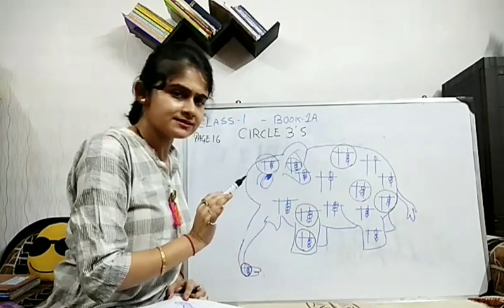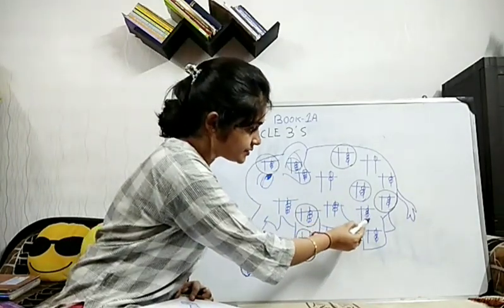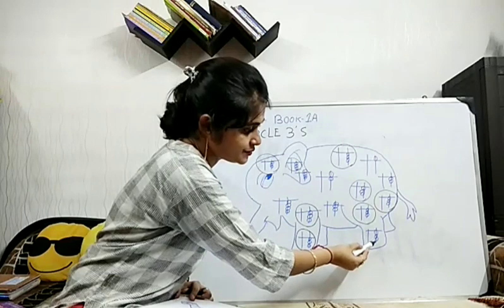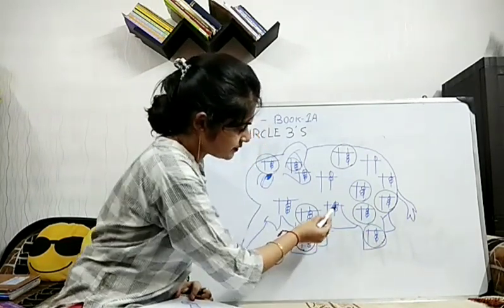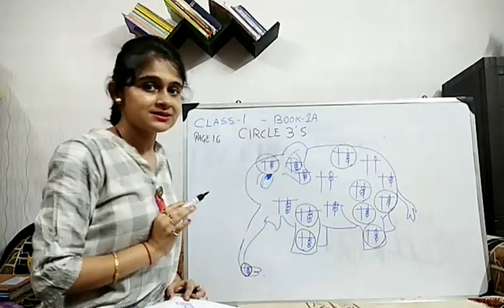This is already circle. 1, 2, 3. Yes, we will circle this. 1, 2, 3 lower beads. We will circle. And this one. 5, 6, 7. We will not circle.